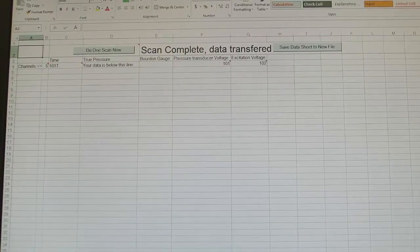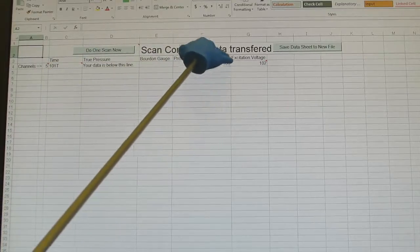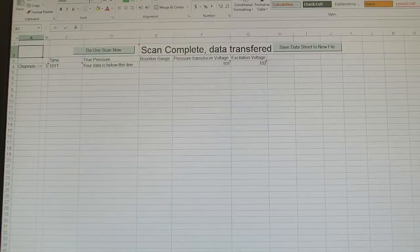Now look at the Data spreadsheet, taking note of all the column headings: True pressure, Bordon gauge, pressure transducer voltage, and excitation voltage.